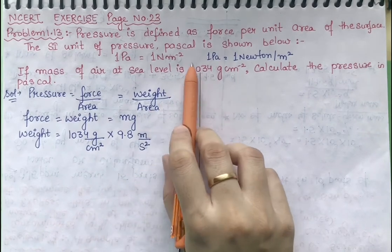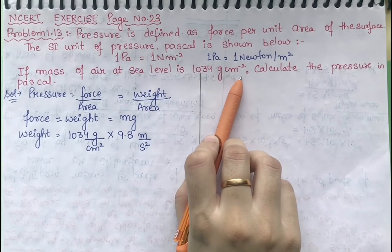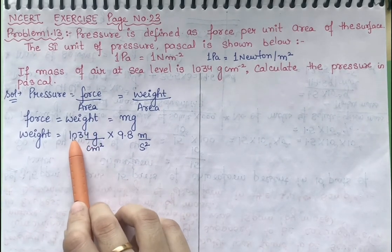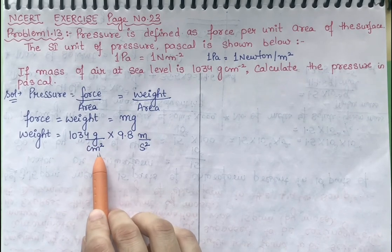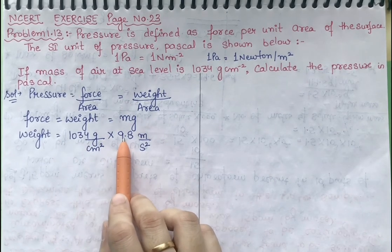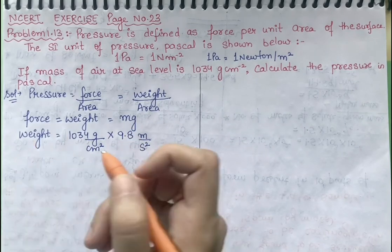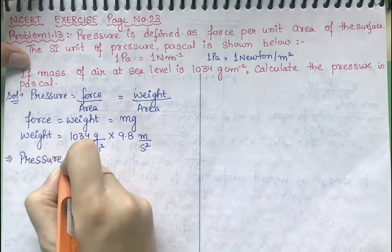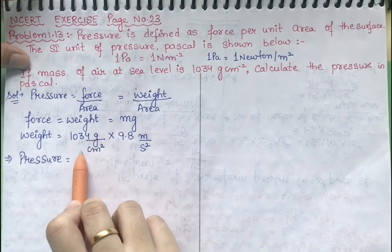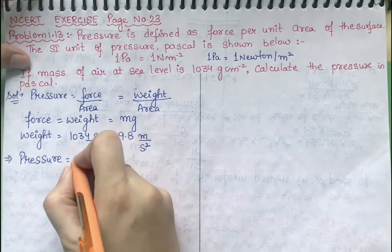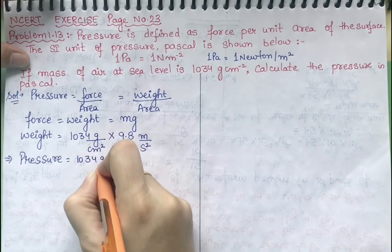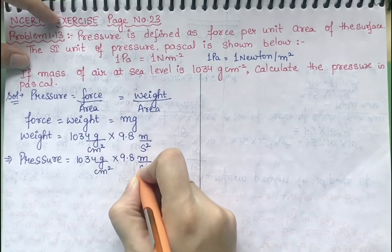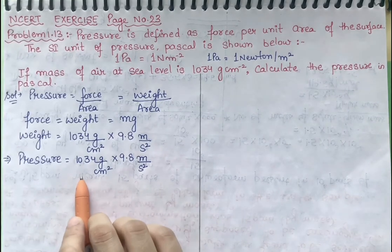The mass of the air is 1034 gram, and the area is 1 centimeter square — since the mass is given with respect to 1 centimeter square area. So the complete formula for pressure is: 1034 gram per centimeter square multiplied by 9.8 meter per second square. Now I have the pressure in this form.